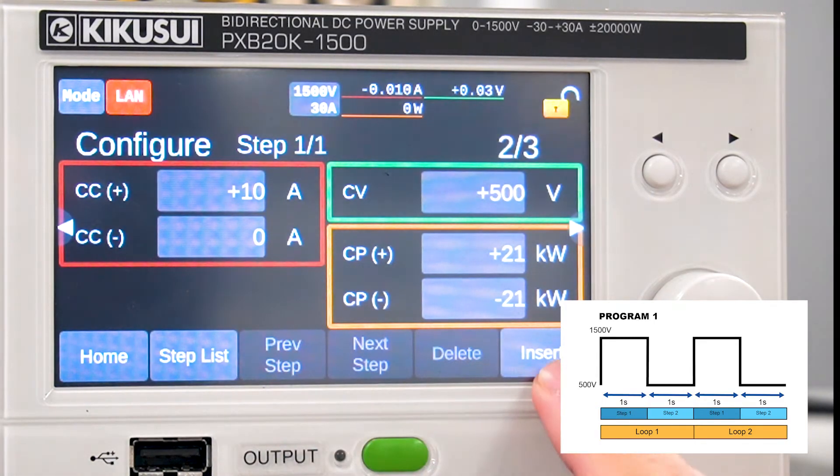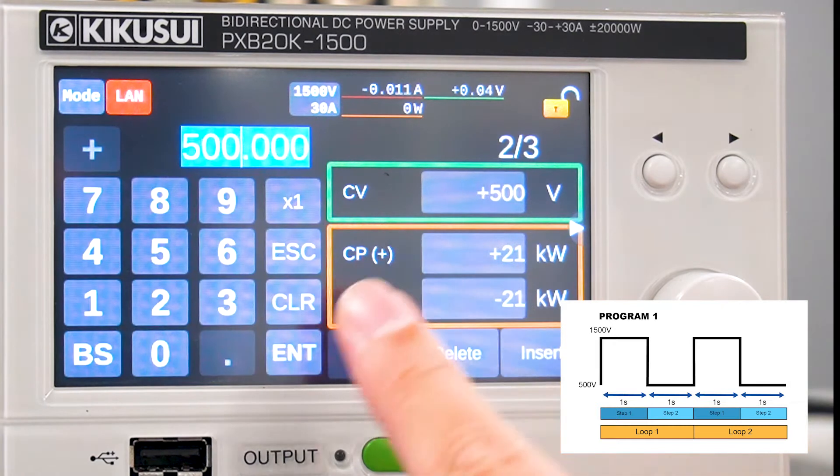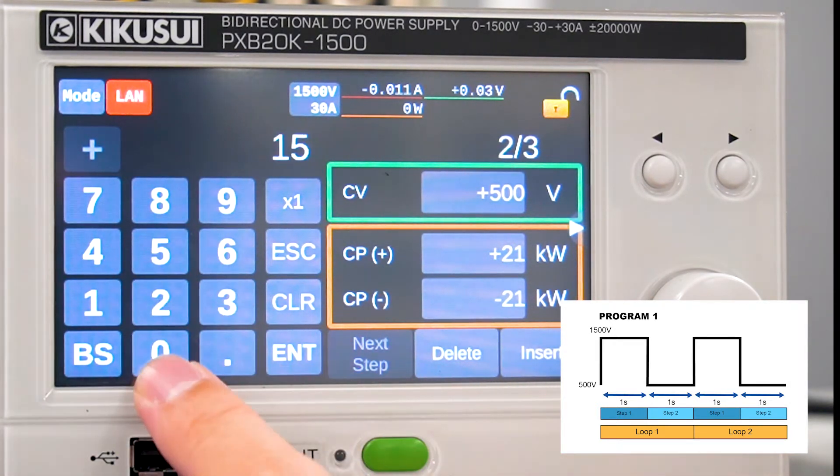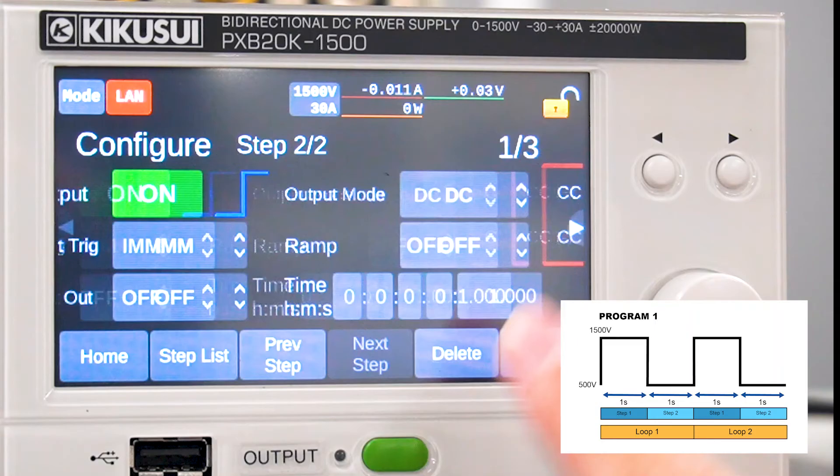Press insert to move to step 2. Now, let's edit step 2. First, change the voltage to 1500 volts.